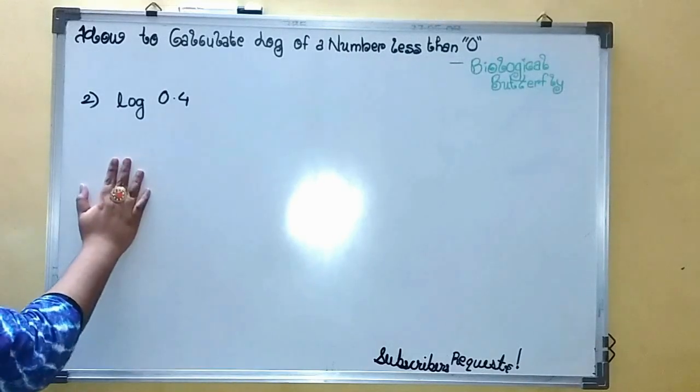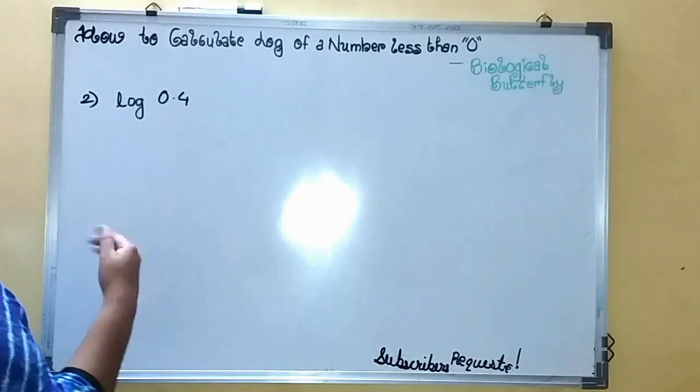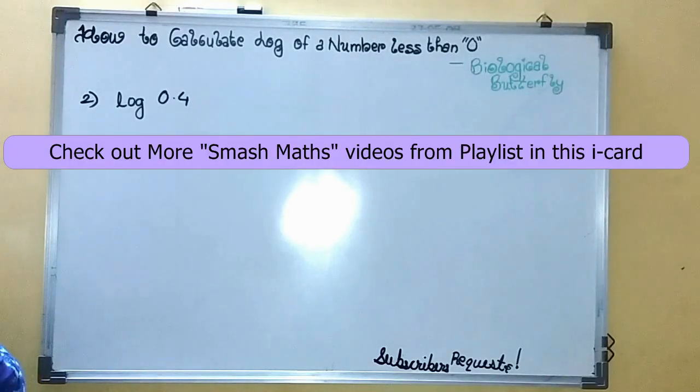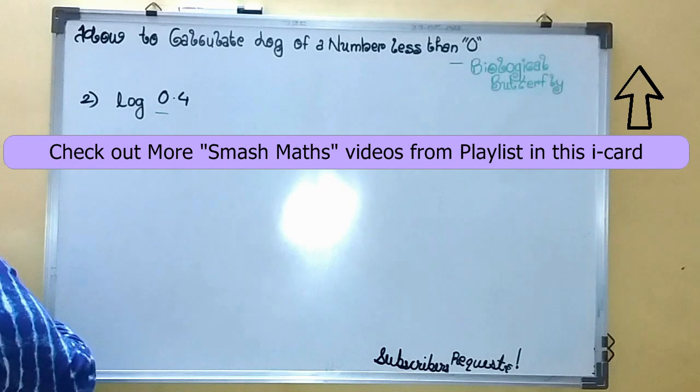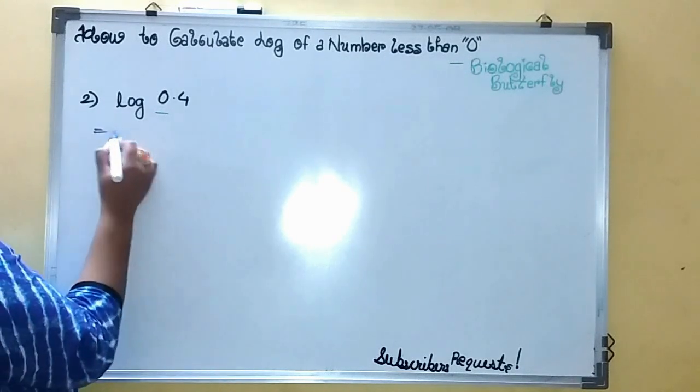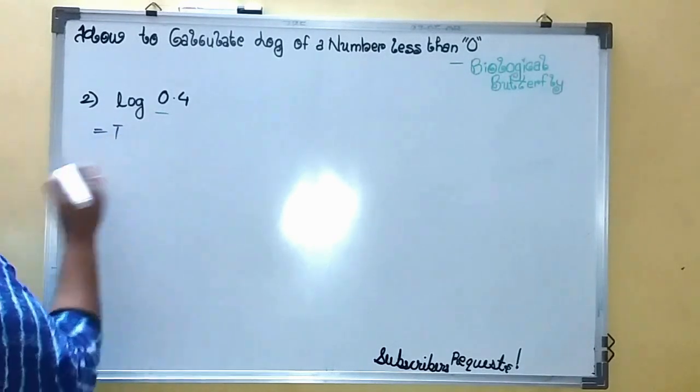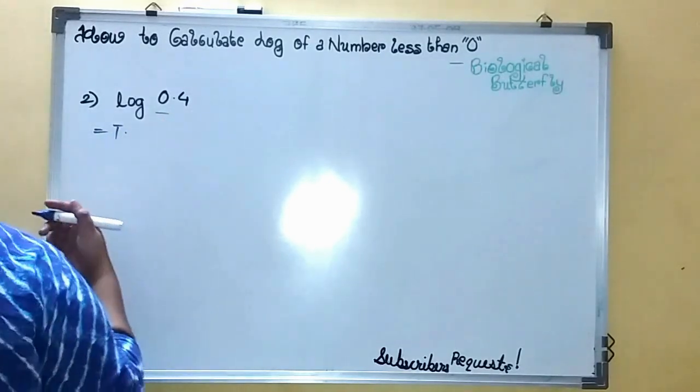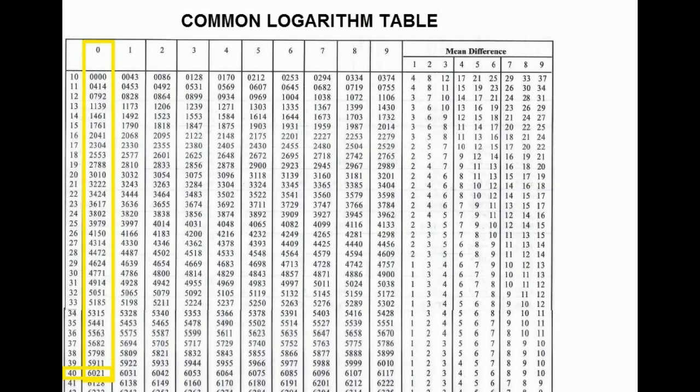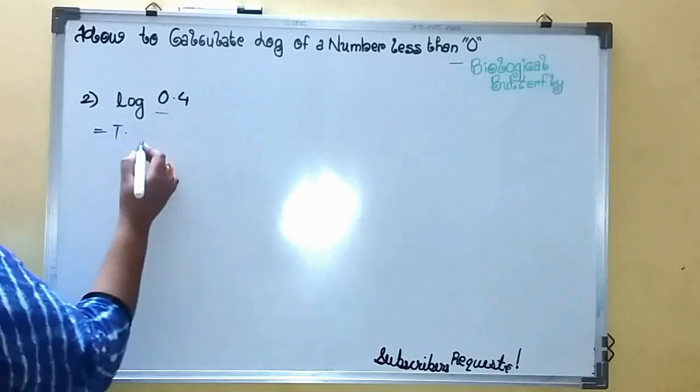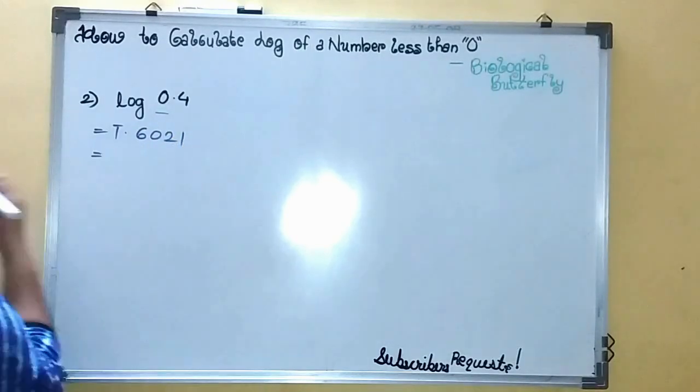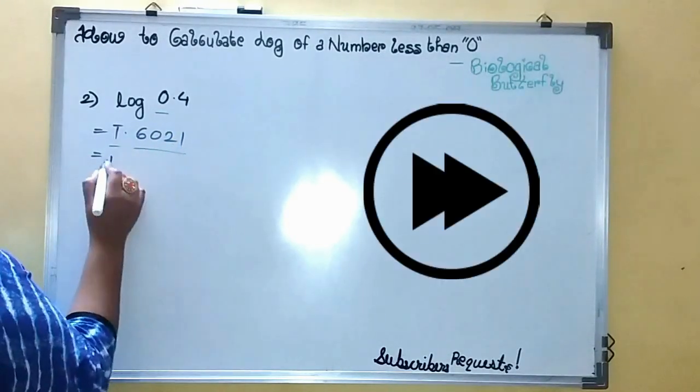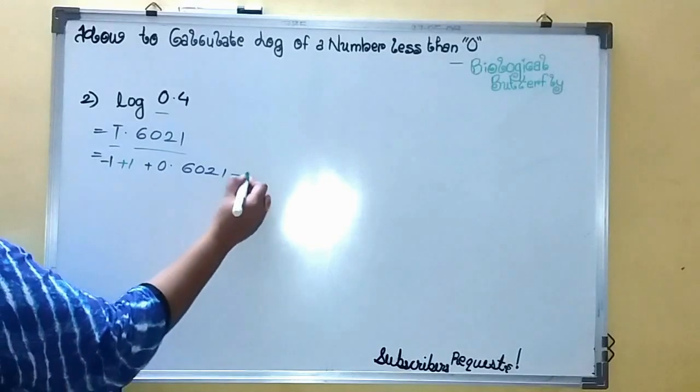This is the second example which has been suggested by a subscriber, so thanks to you again. What we are going to do: count the number of zeros and convert it into bar. This will become one bar. Calculate log of 14 in the next step.